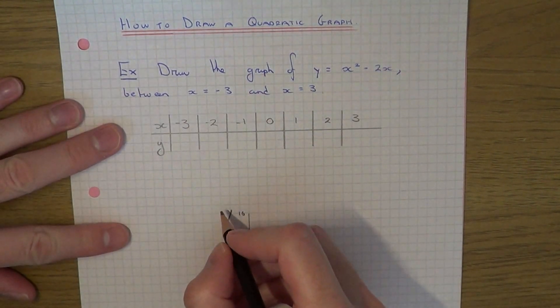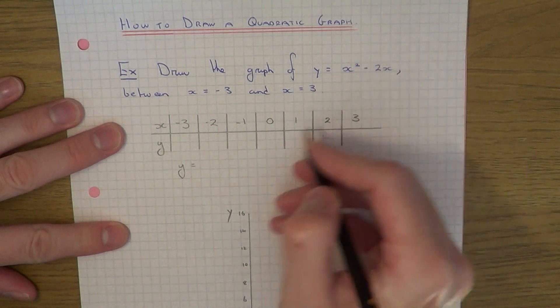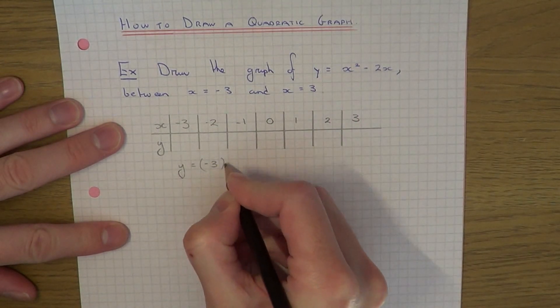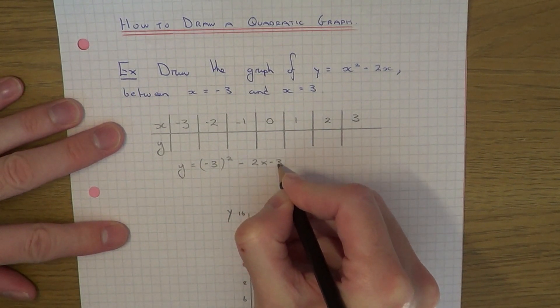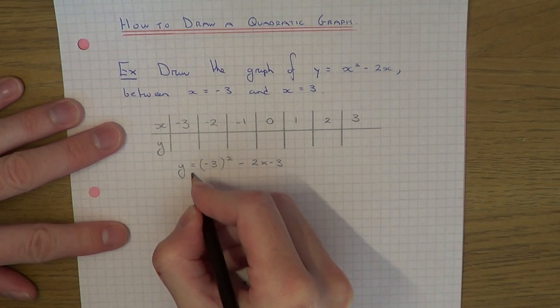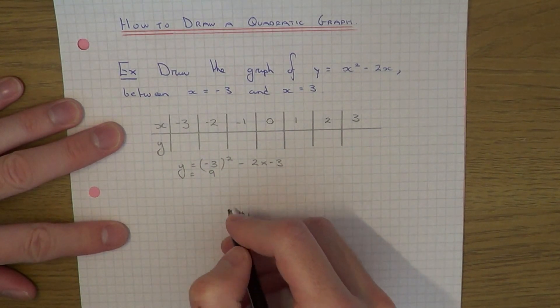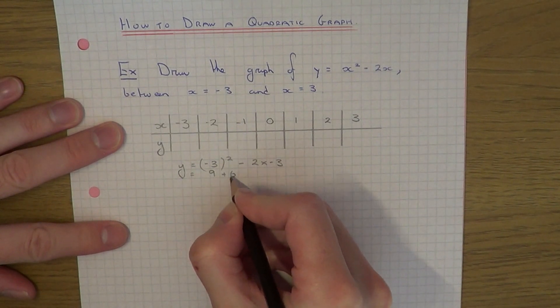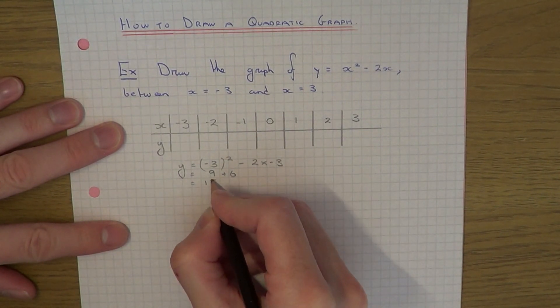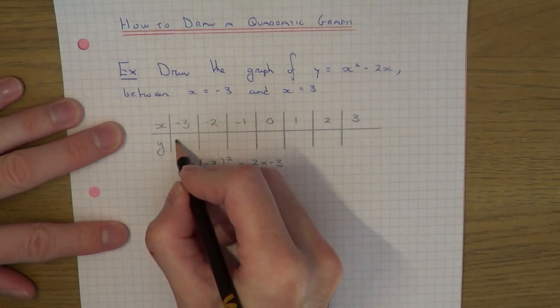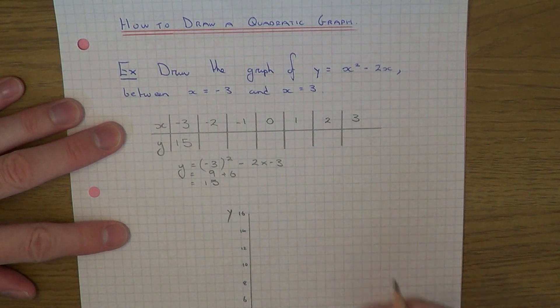Let's start off with minus 3. If I sub in minus 3, we have minus 3 squared minus 2 times minus 3. Minus 3 squared is plus 9. Minus 2 times minus 3 is plus 6. So 9 add 6 is 15. Our first coordinate then is minus 3 comma 15.